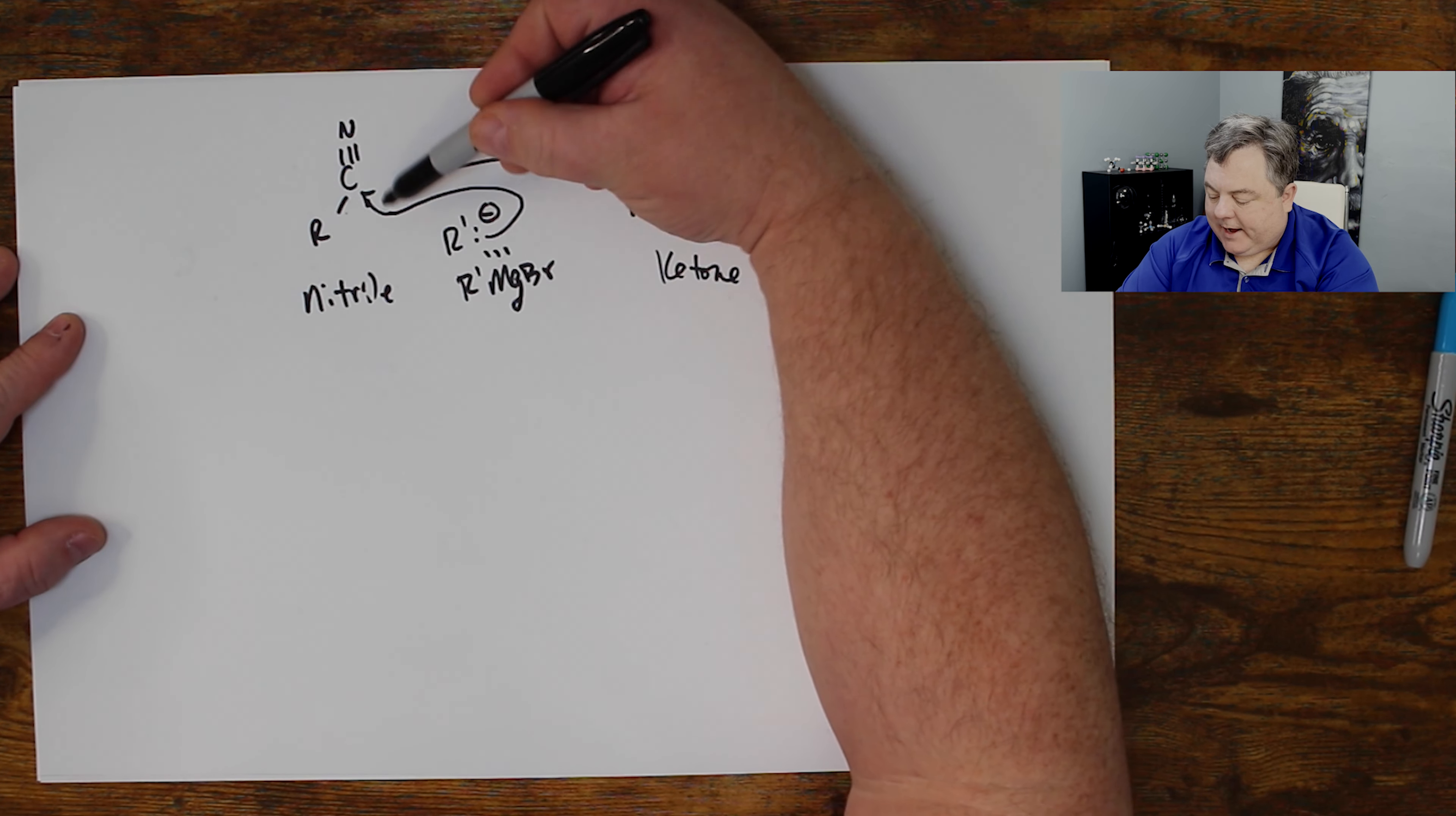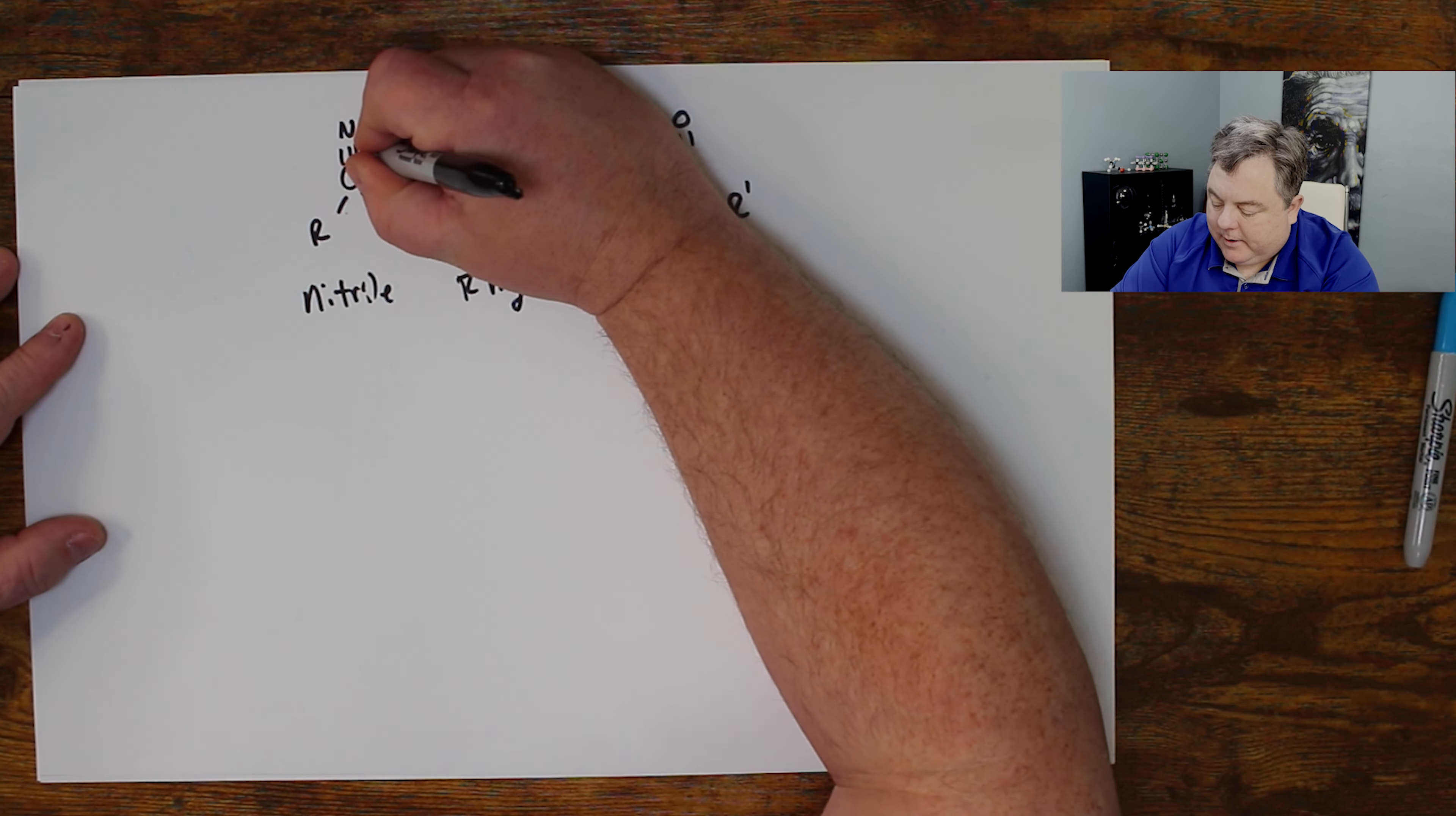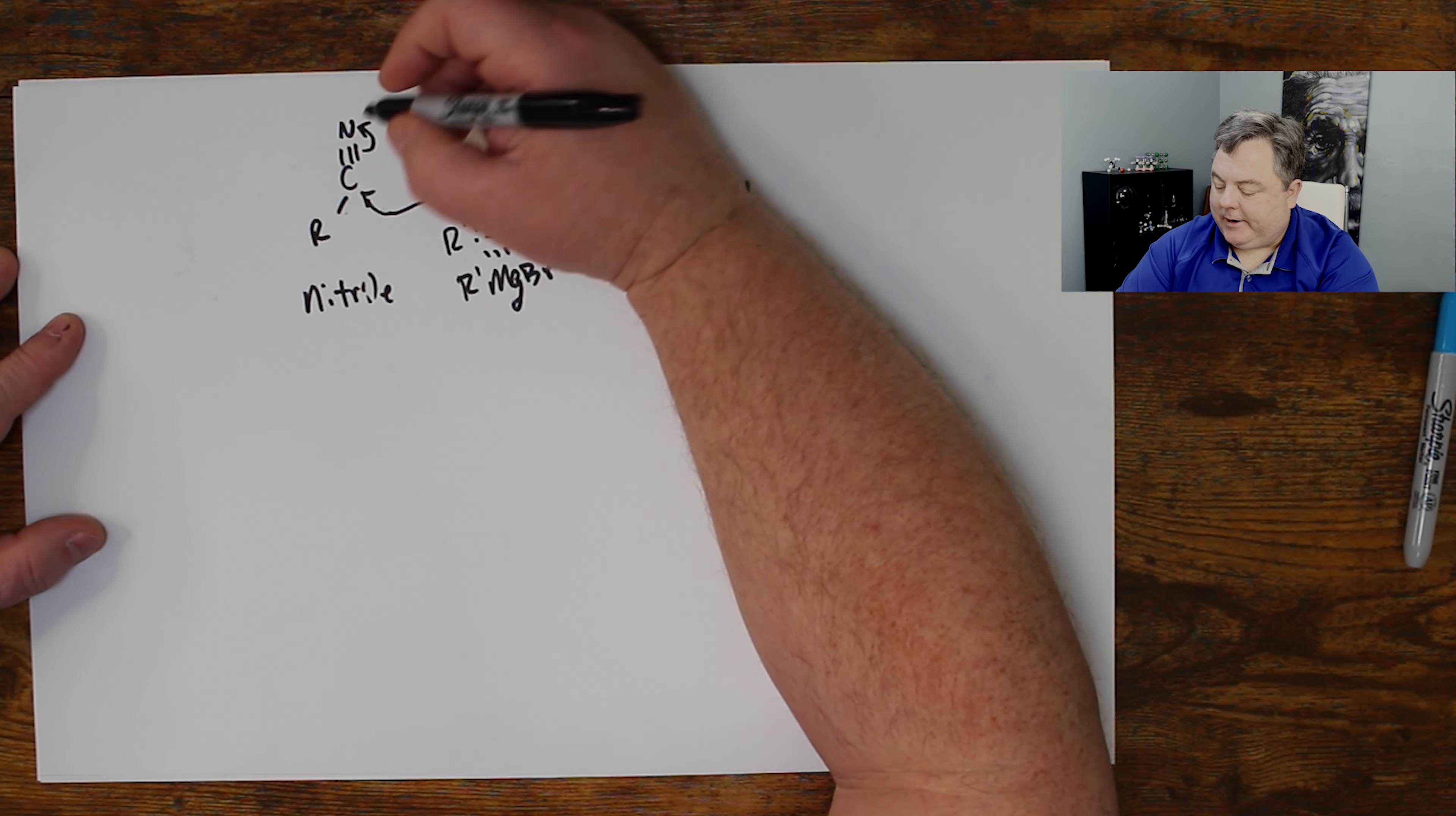That would be one, two, three, four, five bonds. That's too many bonds on that carbon. So I have to fix it by those electrons going up to the nitrogen.